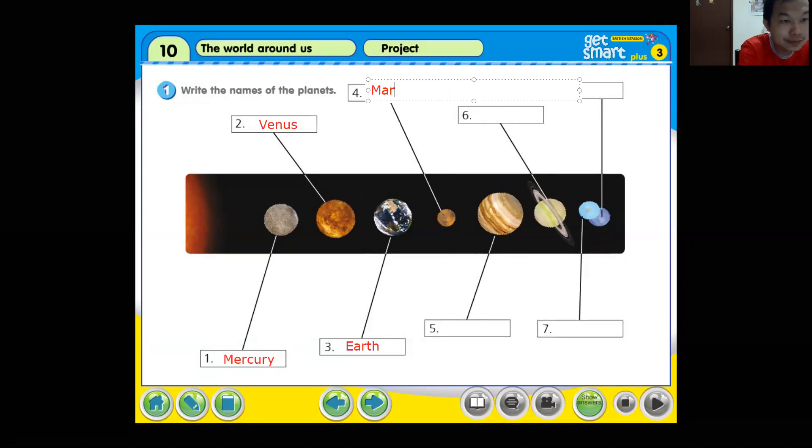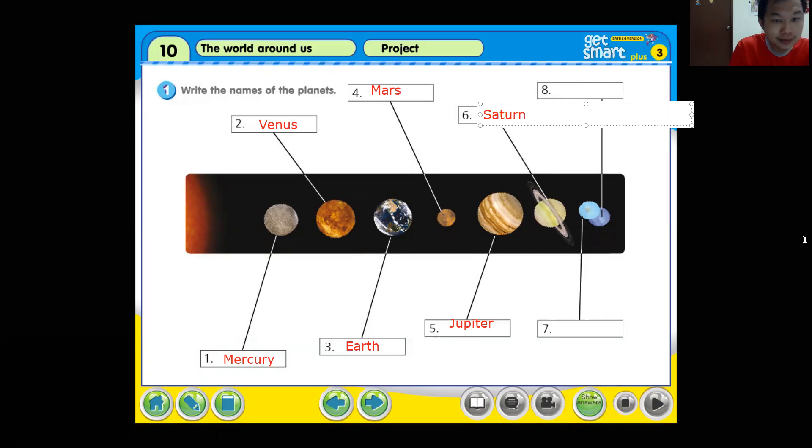Then we have Mars. Then we have the biggest planet, Jupiter. Remember the first letter always capital letter. Then the nicest, the prettiest, Saturn. After that we have Uranus and Neptune.